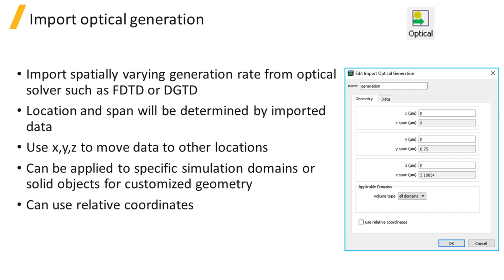The import optical generation source object allows importing a user-defined optical generation region with a spatially varying generation rate. This allows importing optical generation calculated from light absorption in optical simulations using optical solvers such as FDTD or DGTD. The location and dimension of the object will be determined by the imported data, and XYZ values can be used to move the data to other locations.